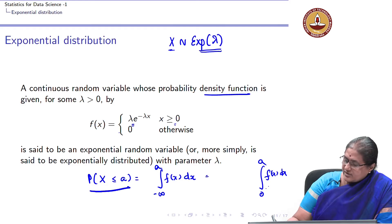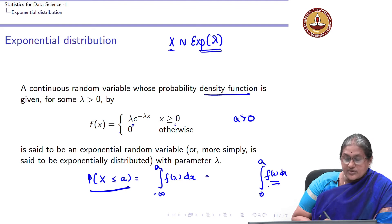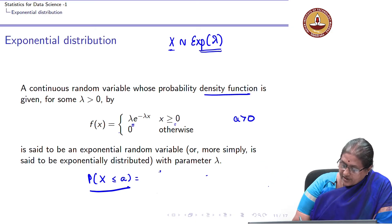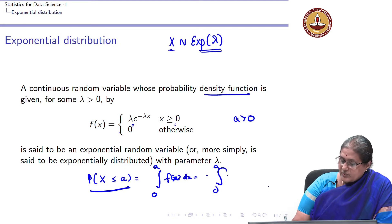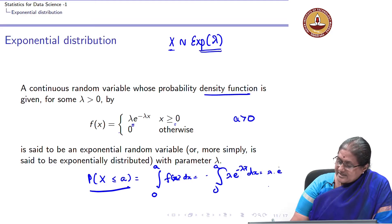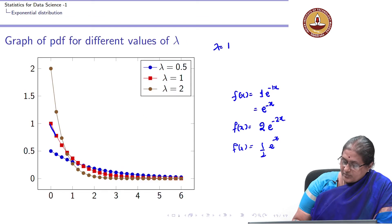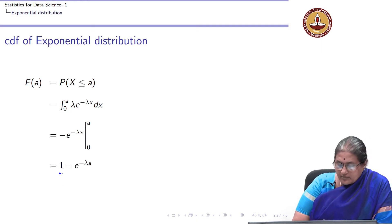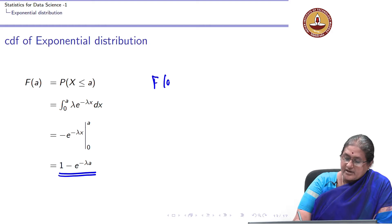So the probability that X is less than or equal to A equals the integral from 0 to A of lambda e to the minus lambda x dx, provided A is greater than or equal to 0. Factoring out lambda and integrating gives e to the minus lambda x divided by minus lambda, evaluated from 0 to A. The minus lambda cancels out, yielding the CDF: 1 minus e to the minus lambda A.